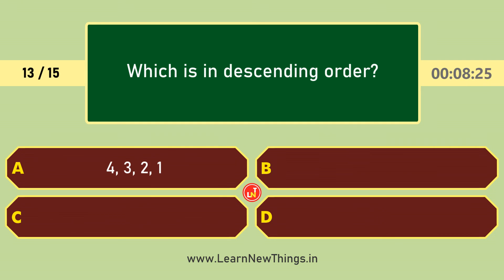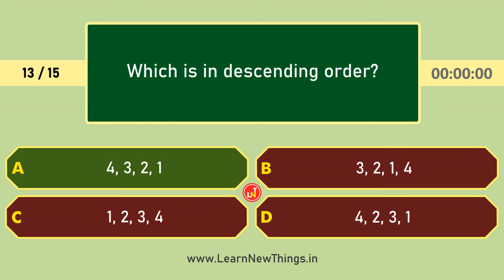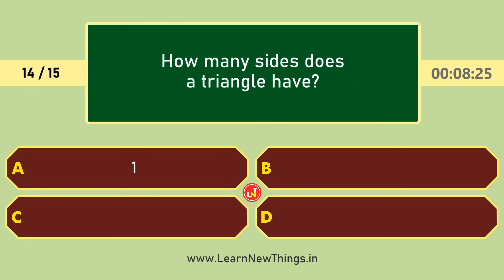Which is in descending order? 4, 3, 2, 1. How many sides does a triangle have? 4.